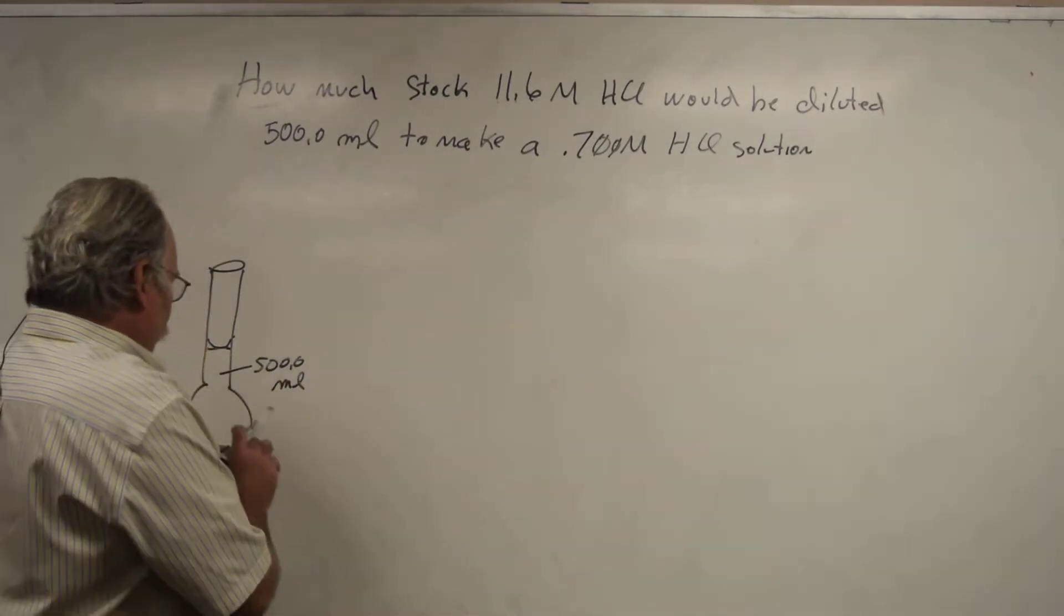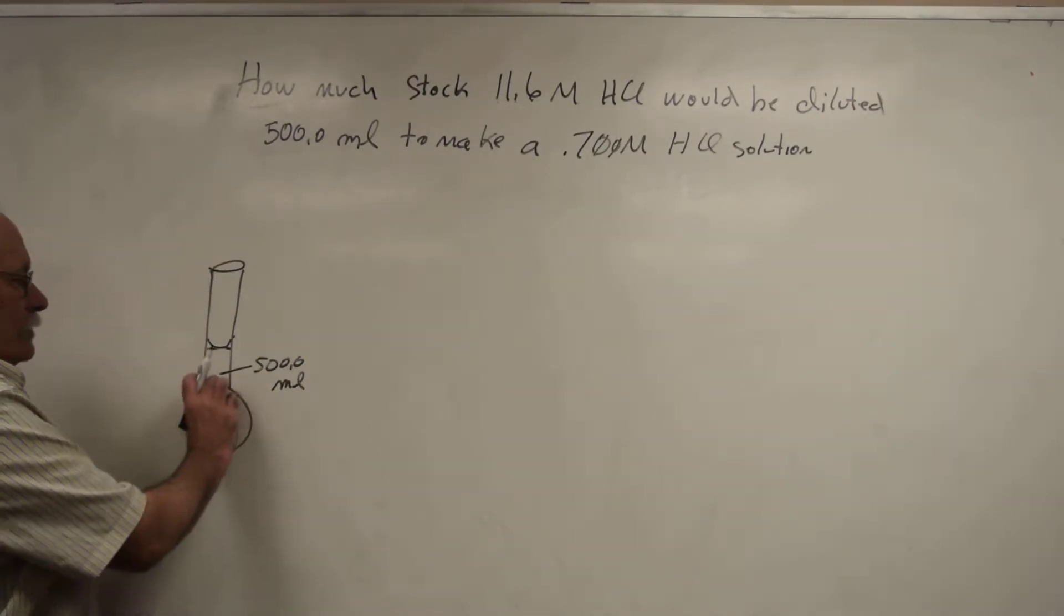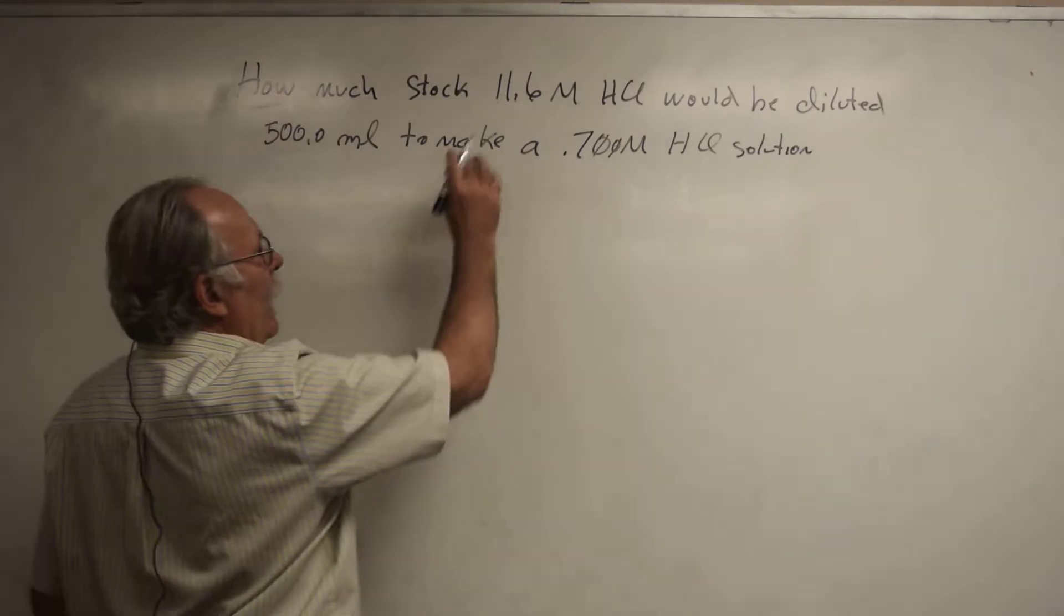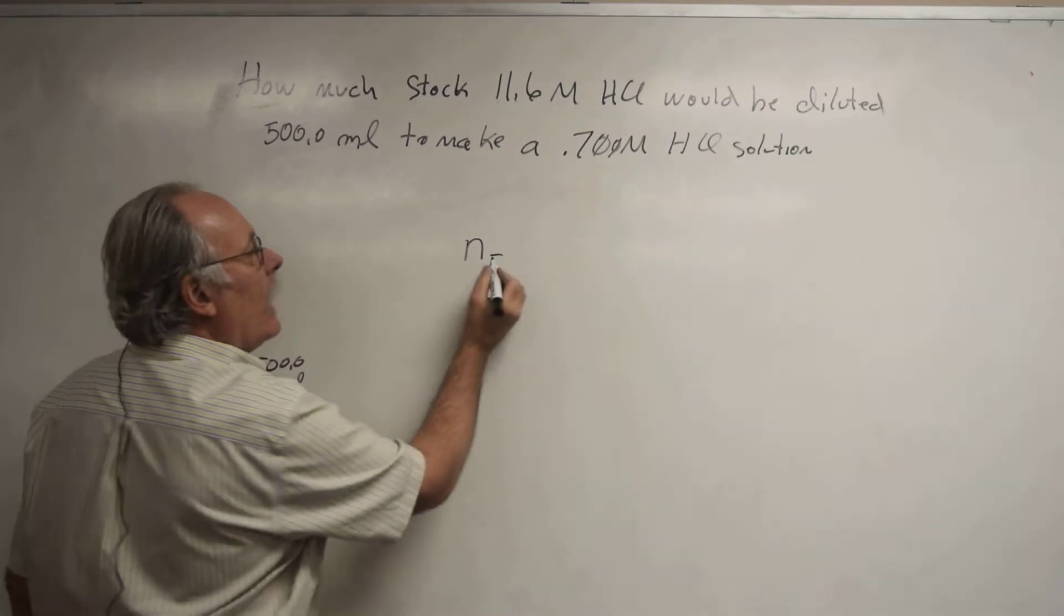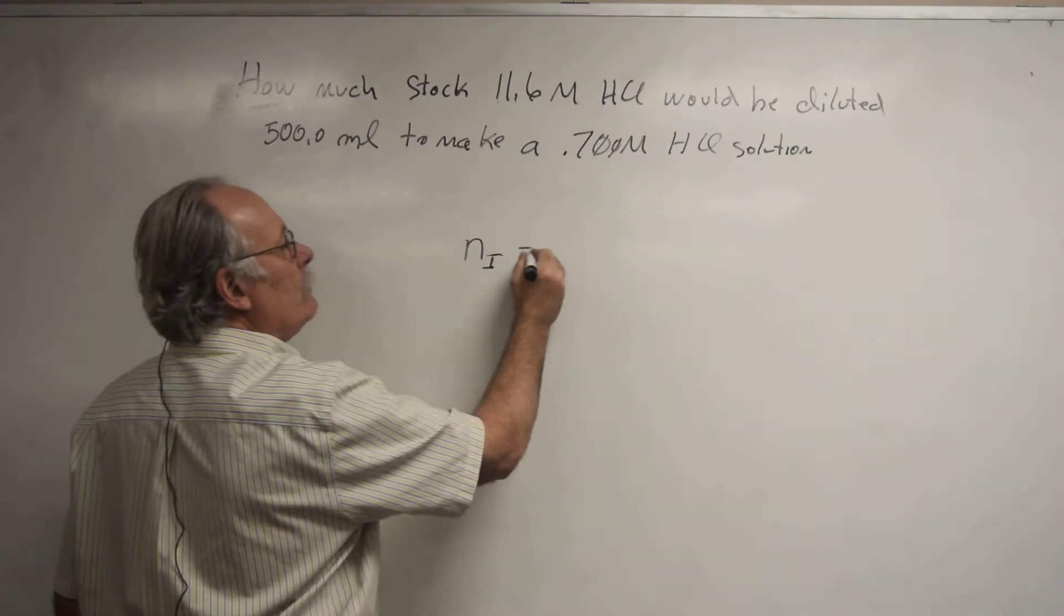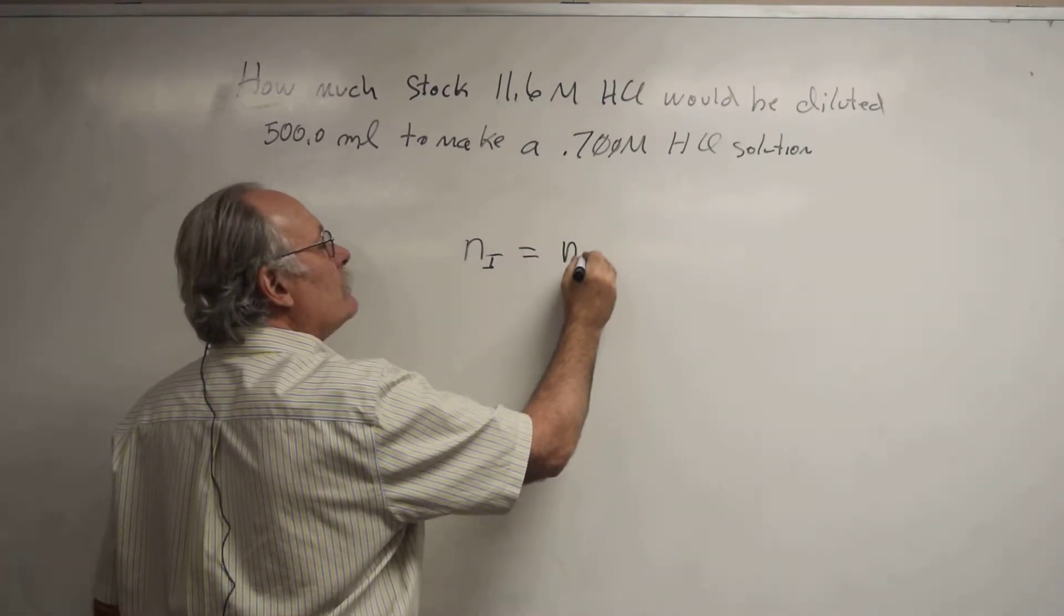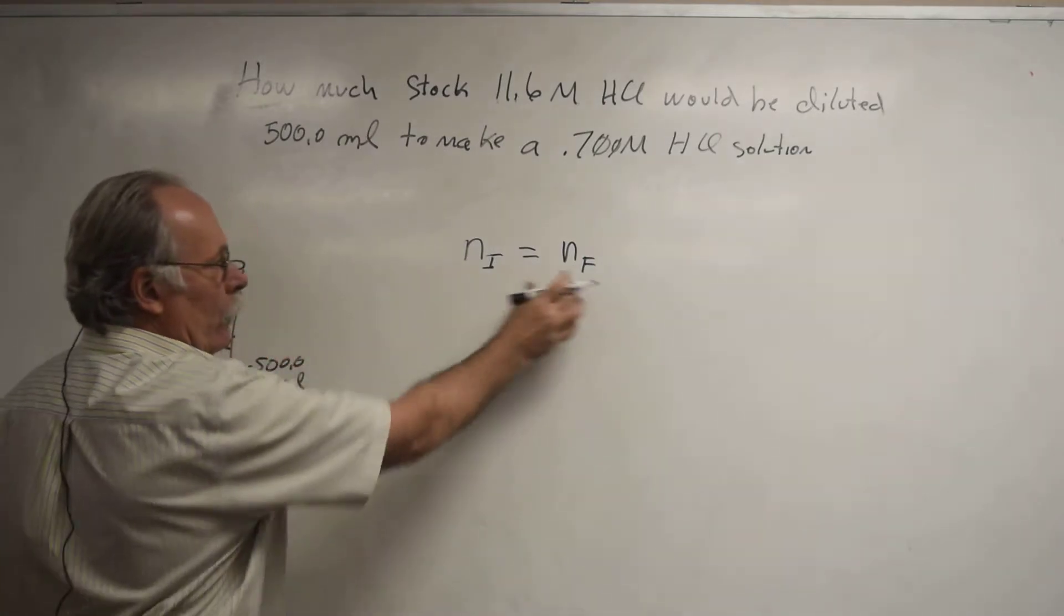So after I add this, I add solvent. So I have not added any more HCl. So what I could say is that the moles before dilution, that is the initial moles of HCl, is equal to the moles after dilution, the final moles.